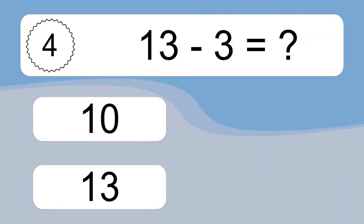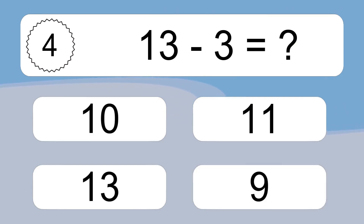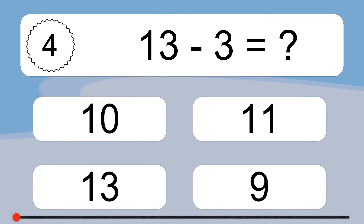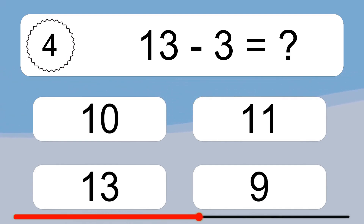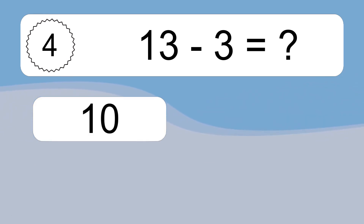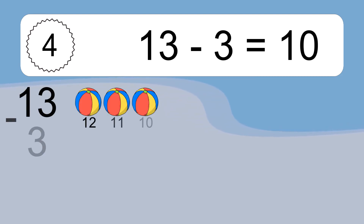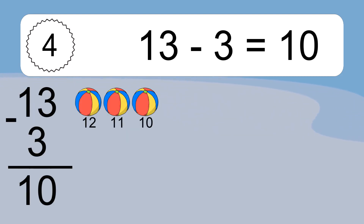13 minus 3 equals what? 13 minus 3 equals 10. Let's count it: 12, 11, 10.